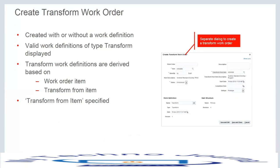For a transform work order, the valid work definition types for the work order item and transform-from item combination are displayed and the user selects one. The transform work order can be created in a released or unreleased status. The remaining behavior is the same as standard or non-standard work orders — the only difference is you are transferring from one item to another.